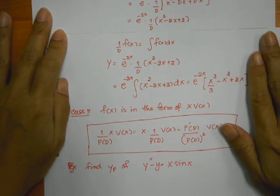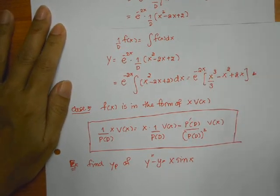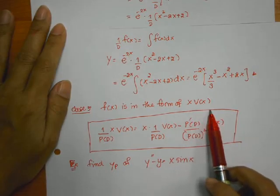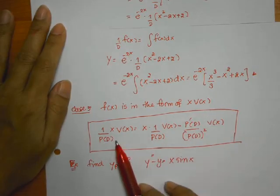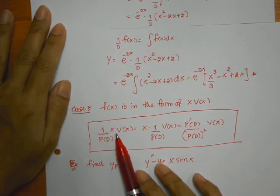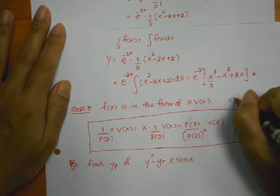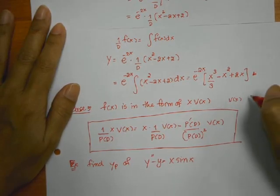And the last case is that our f(x) is in the form of x times v(x). So in that case, if you have 1 over p(dx) times v(x). So v(x) could be anything - v(x), not anything, sorry, it's a function.